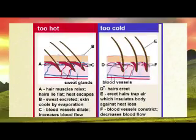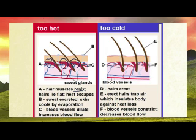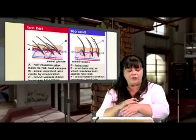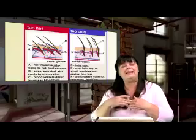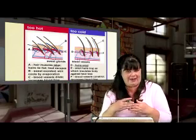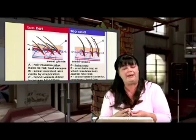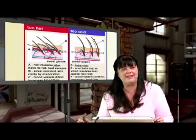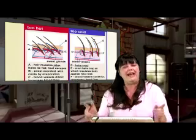Your skin is either going to react to being too hot or too cold, and it's going to do the opposite in each case. If it's too hot, the muscles attached to your skin are going to relax and that allows the hairs to lie flat. On the other hand, if you're too cold, those muscles contract and pull the hairs upright. That means even though you've got only a little bit of hair on your skin, it does trap a layer of air which helps to insulate and warm you up.